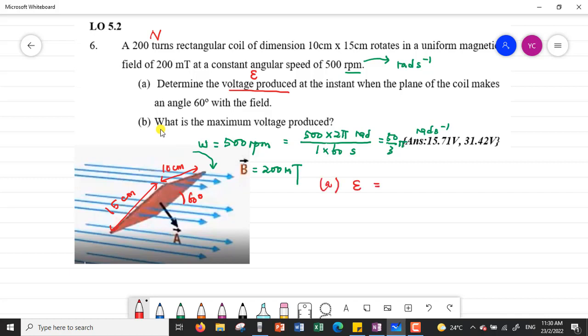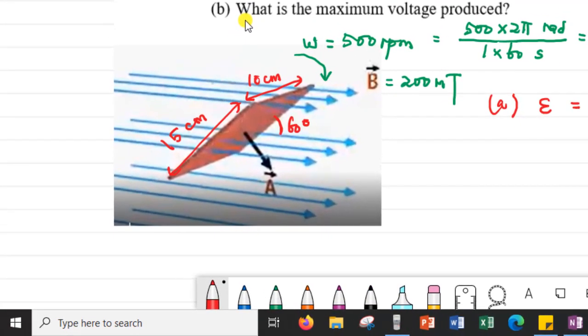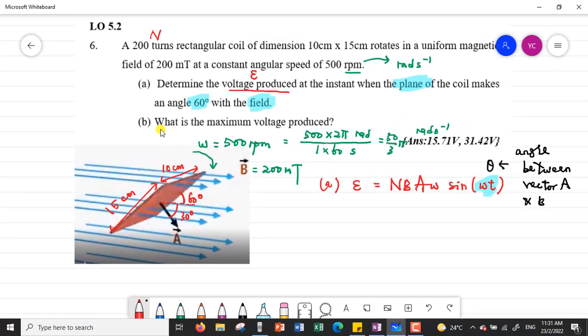For question A, EMF induced for a rotating coil is NBAω sin(ωt). This ωt actually represents the theta angle, but I have to be careful. The angle theta is always referred to the angle between vector A and B. But the 60 degrees here is between the plane and the magnetic field B. We can see obviously, the angle between B and vector A will be 90 degrees minus 60, which is 30 degrees.